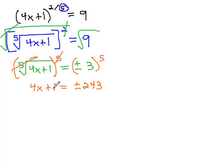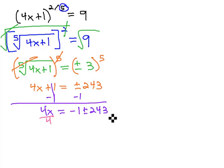Now, we can clear this two-step equation by subtracting 1, giving us 4x equals. Remember to write the expression out, negative 1 plus or minus 243, and then divide both sides by 4 to get x is equal to negative 1 plus or minus 243 over 4.